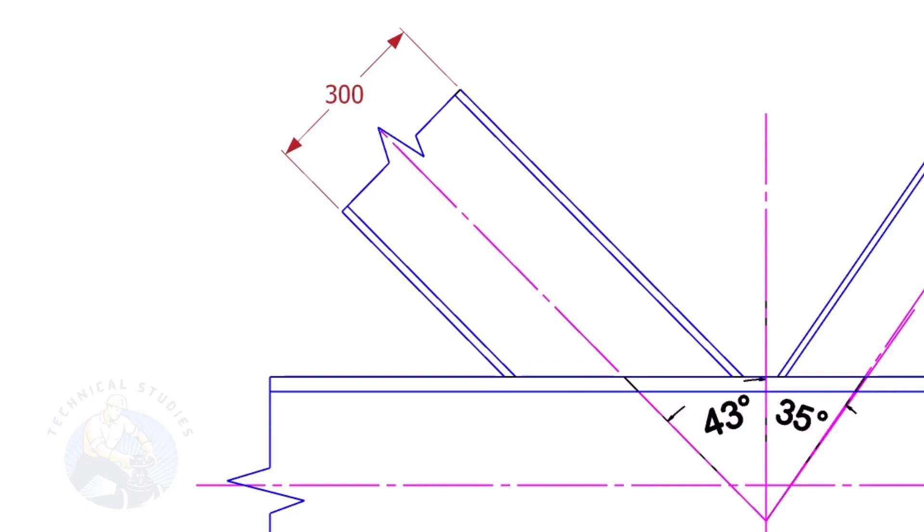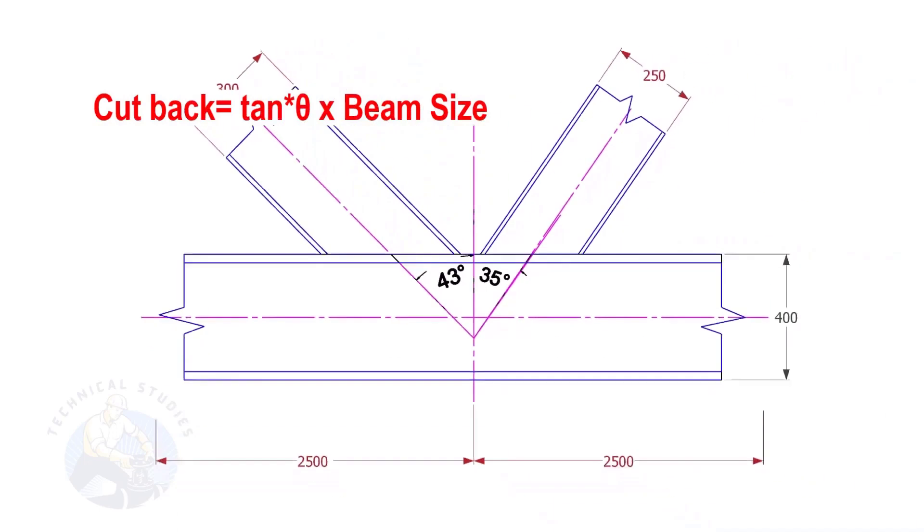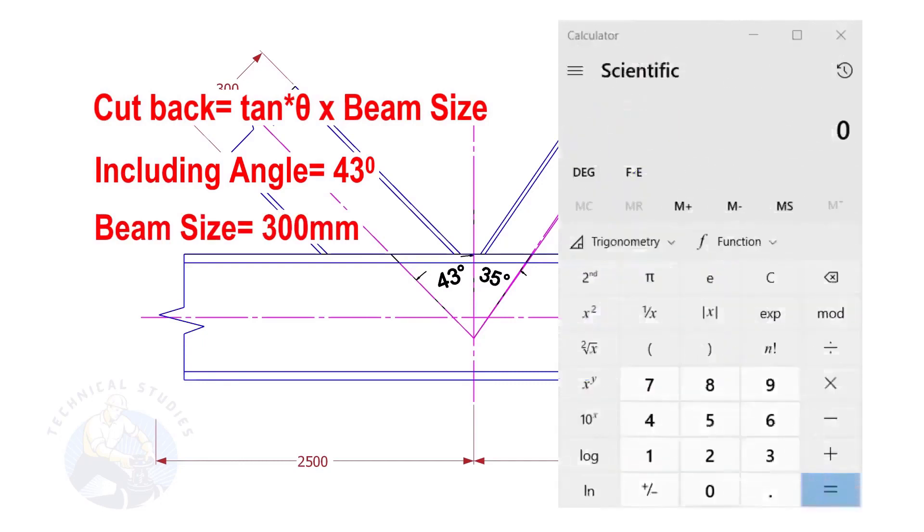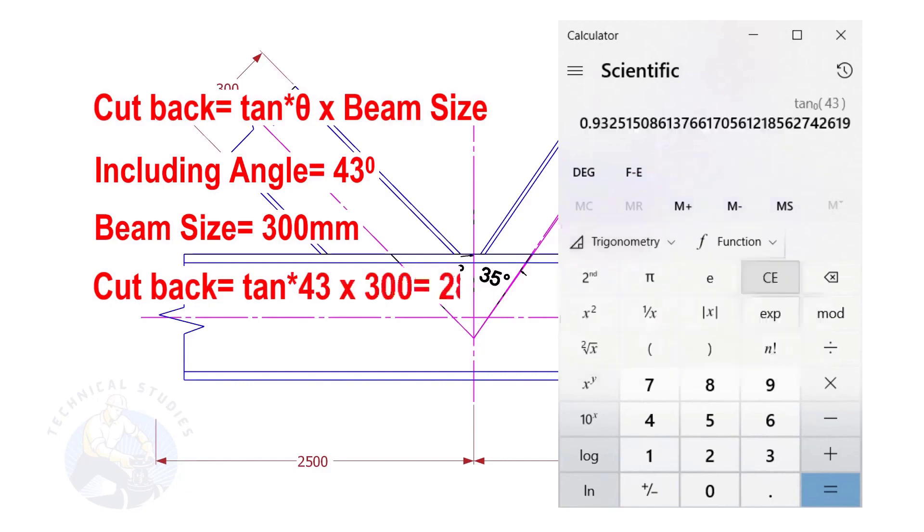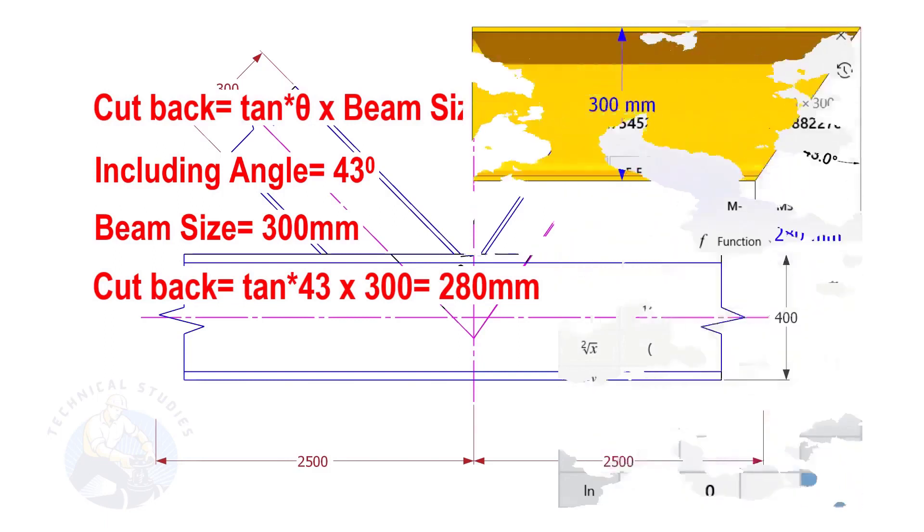The formula to calculate the cutback is tan degree multiplied by the size of the beam. If the including angle is 43 degrees and the size of the beam is 300, the cutback is tan 43 into 300. The answer is 279.7. Let us write it as 280 millimeters.